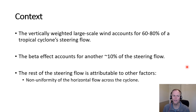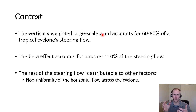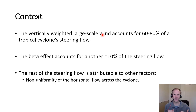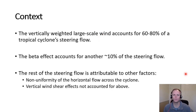Some of these other factors include the non-uniformity of the horizontal flow across the cyclone. We've sort of averaged the large-scale wind across the cyclone, but it's variable — it may be faster on one side than the other, or a completely different direction on one side compared to the other. This does have a small effect on tropical cyclone motion.